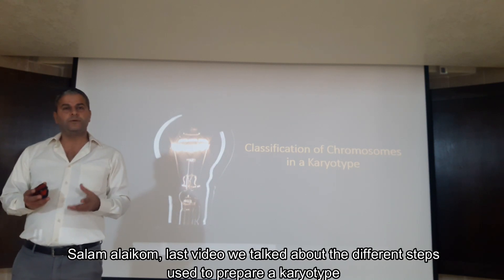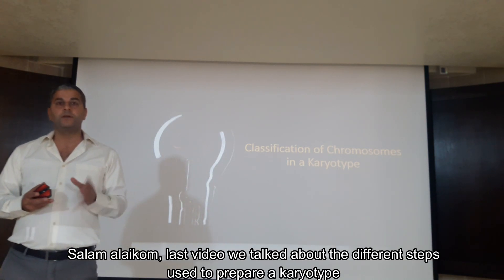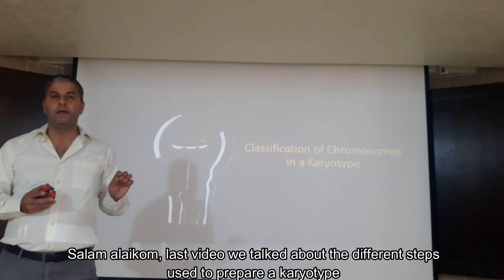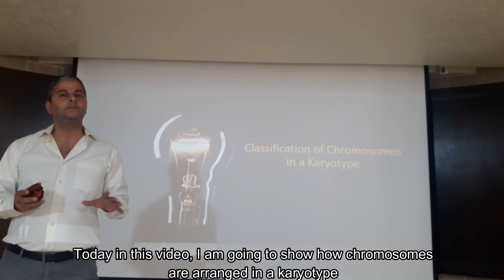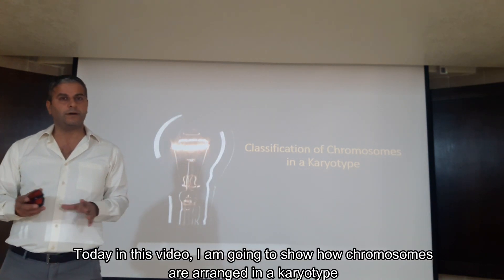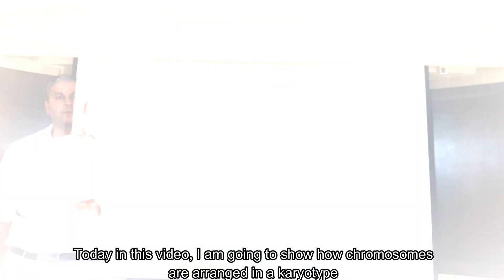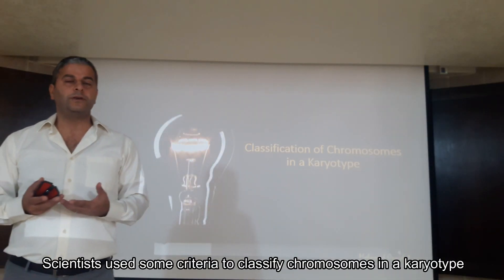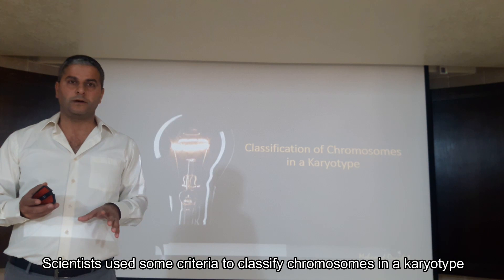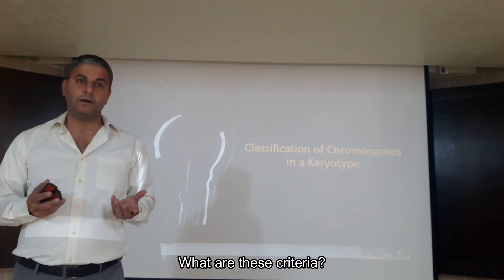Salam alaikum! Last video, we talked about the different steps used to prepare a karyotype. Today, in this video, I'm going to show you how chromosomes are arranged in a karyotype. Scientists use some criteria to classify chromosomes in karyotypes. What are these criteria? Let's see.